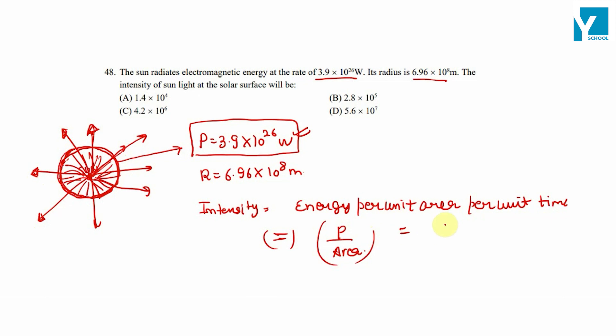So this is equal to 3.9 × 10^26 divided by the surface area, which is 4 × π, which is 3.14, times r². The radius of the Sun is 6.96 × 10^8.